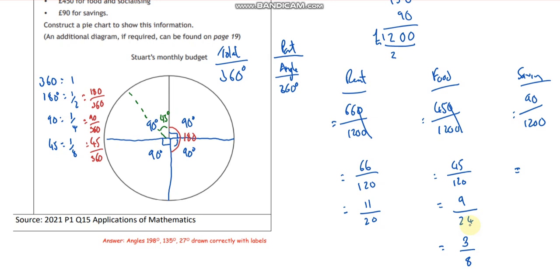And this one, cancel the zeros. 9 out of 120. I can divide by 9, but I'll divide by 3 first. So 3, 5 times divided by 3, 3 over 40. And that's as far as that's going.